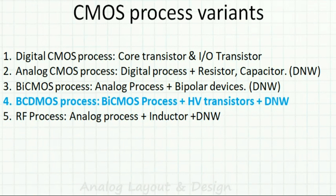We all know that we have a digital CMOS process, which has a core transistor and an I/O transistor. For example, the core may be at 1.8V transistors — PMOS and NMOS — and the I/O at 3.3V, so we have 3.3V PMOS and NMOS transistors. That is the digital CMOS process.